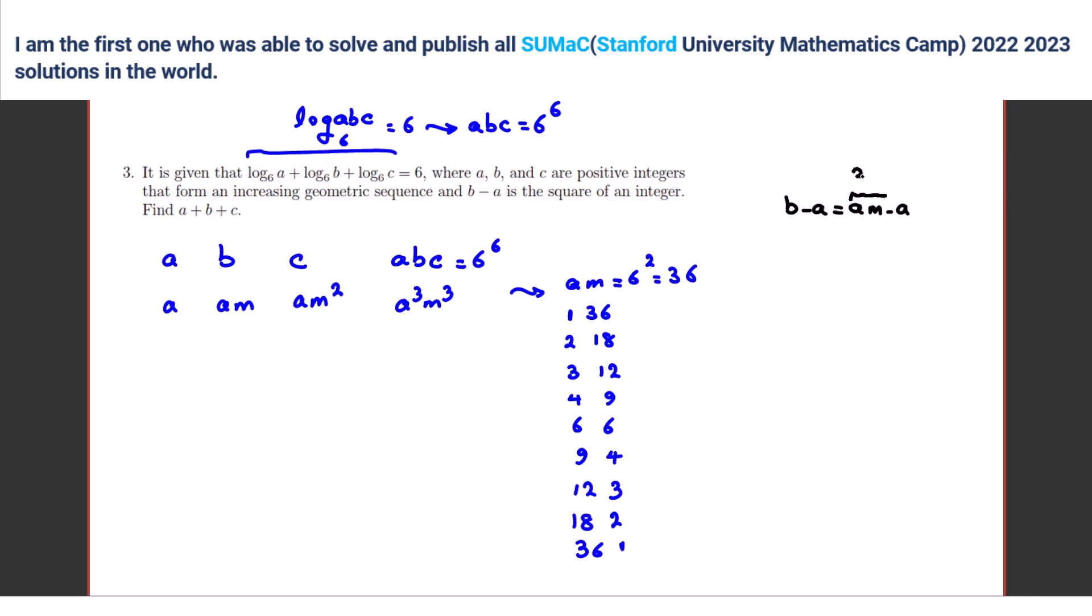You know A M is 36, right? B is always 36. So, 36 minus A should be perfect score. So A can be what? So A can be.